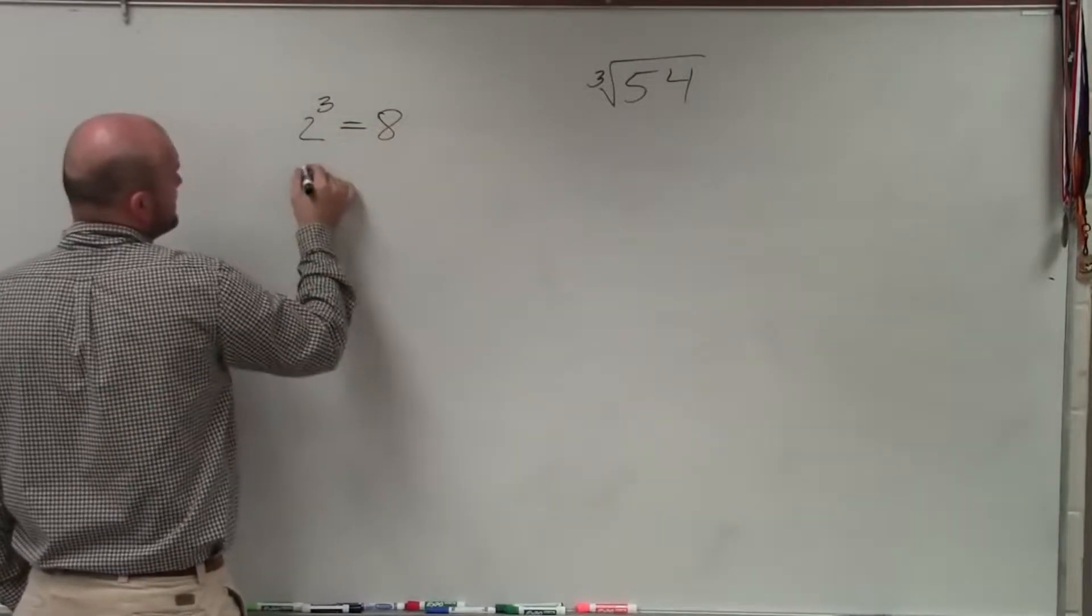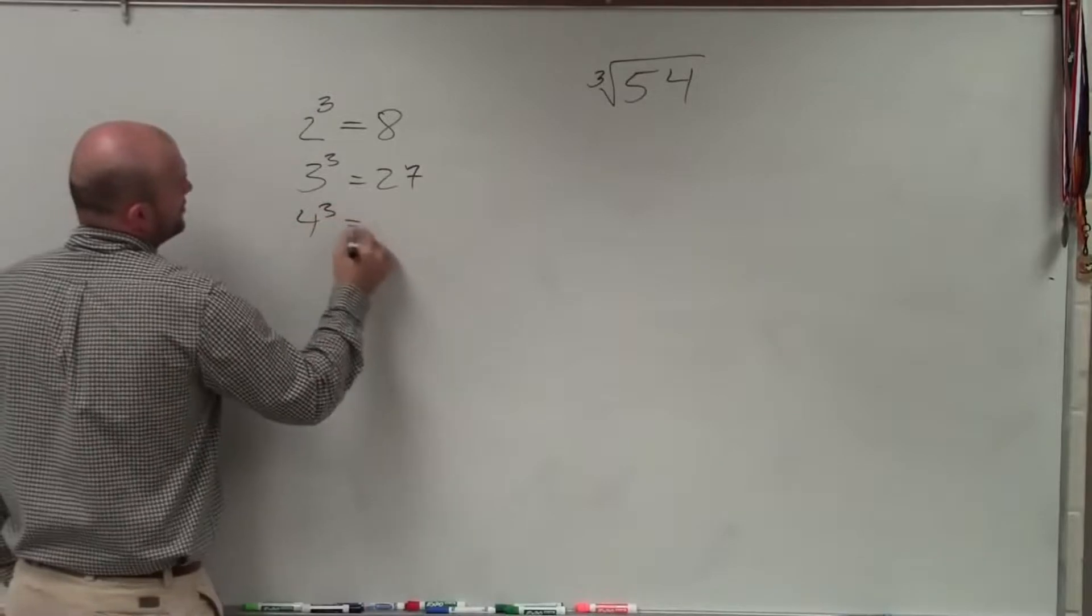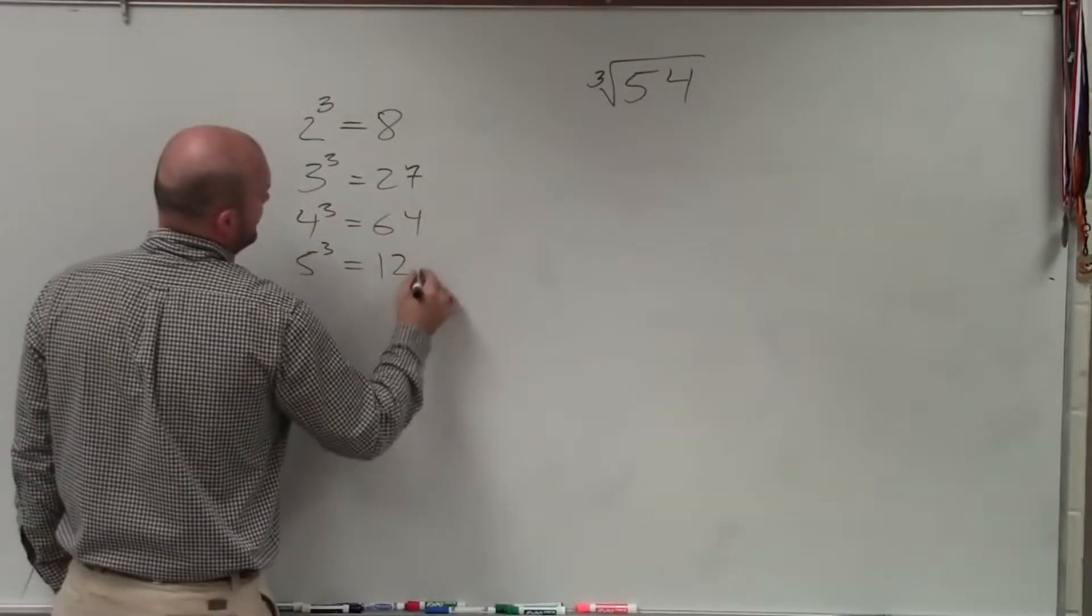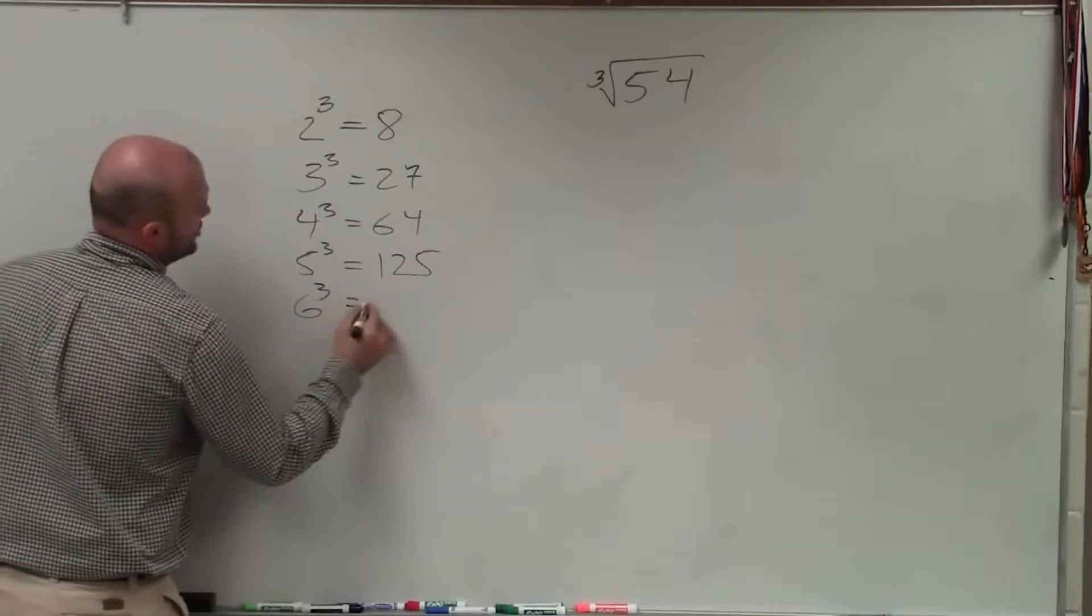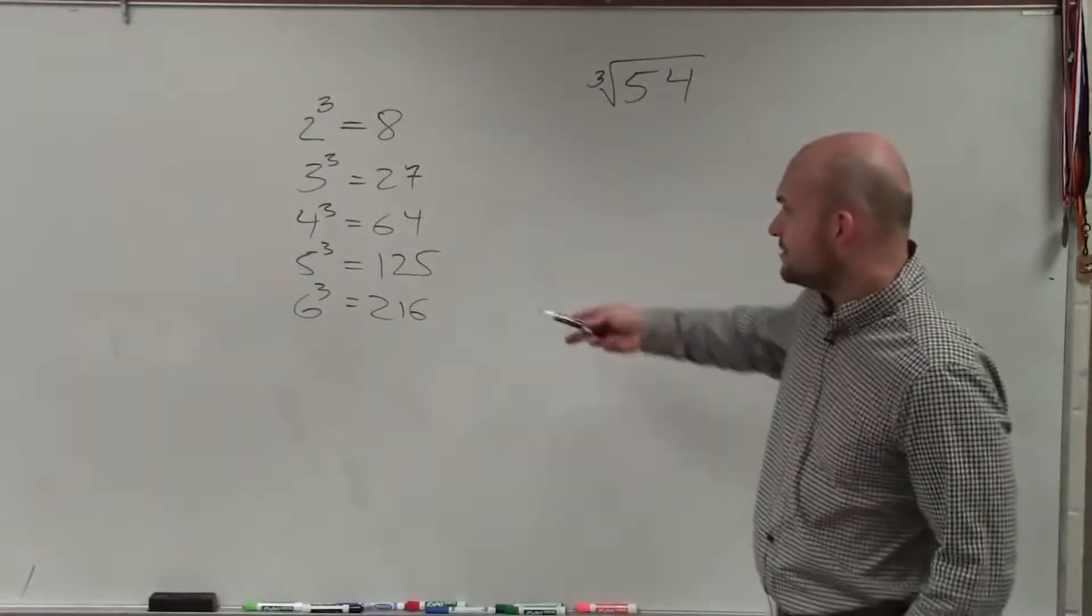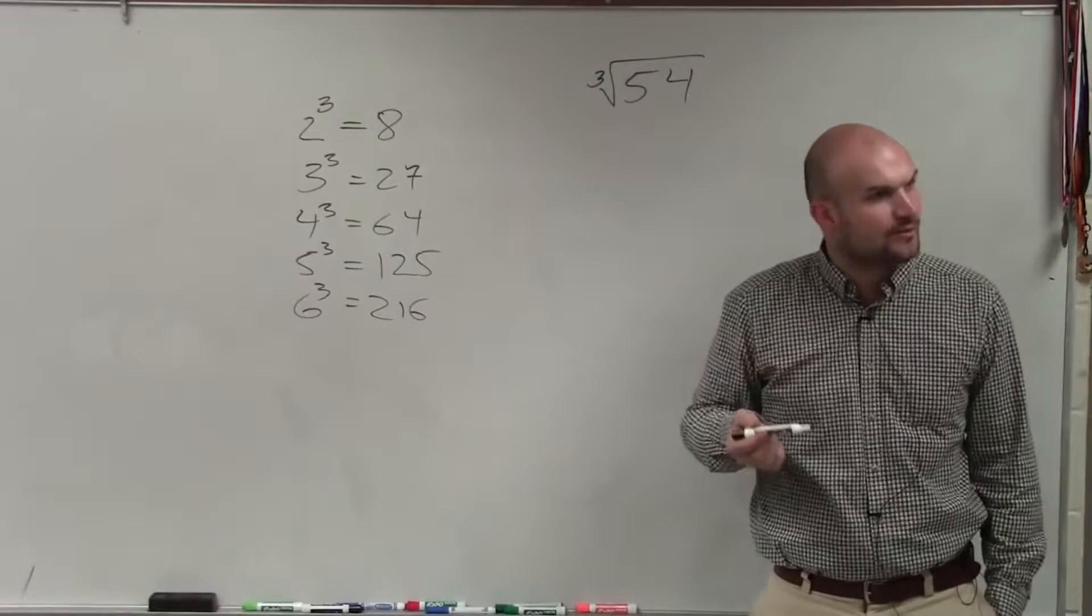2 cubed is 8, 3 cubed is 27, 4 cubed is 64, 5 cubed is 125, 6 cubed is 216. But unless you're dealing with some really high numbers, these are pretty much basically going to be your major numbers that you guys are going to be dealing with.